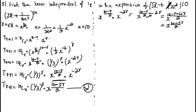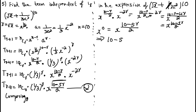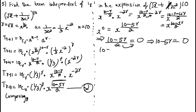Comparing: since the question is term independent of x, compare x⁰ = x^((10-5r)/2). This implies (10-5r)/2 = 0, so cross-multiplying gives 10 - 5r = 0, hence 5r = 10 and r = 2.